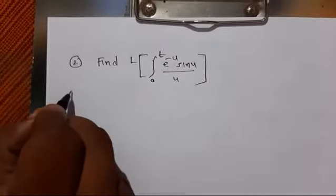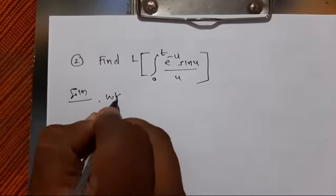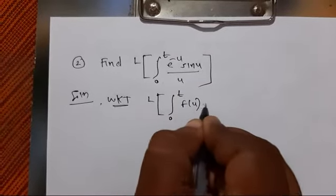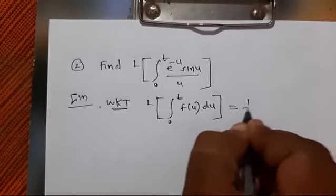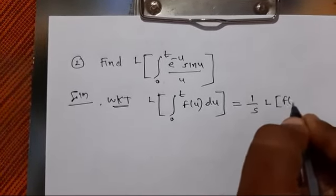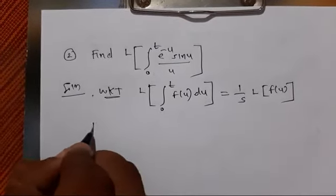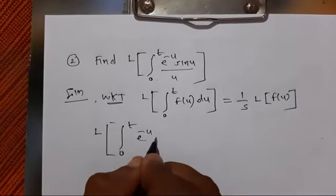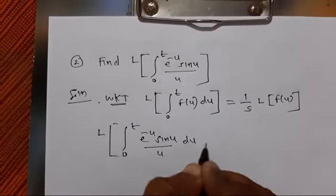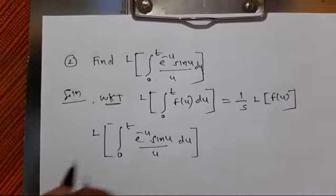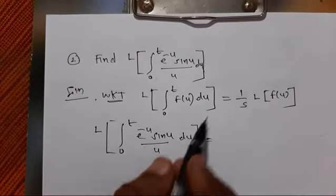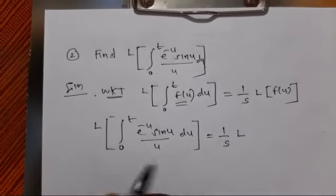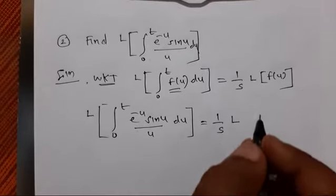Solution: We know that L{∫₀ᵗ f(u) du} = (1/s) · L{f(u)}. I will use this result. Therefore, L{∫₀ᵗ e^(-u) · sin(u)/u du} equals this expression. After comparing with the standard integral, I can see the value of f(u) is e^(-u) · sin(u)/u.